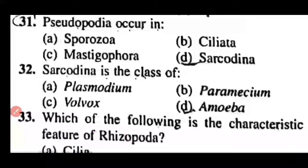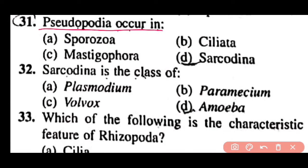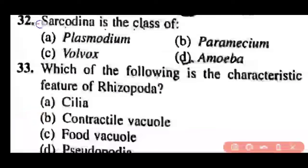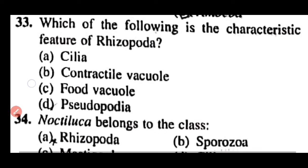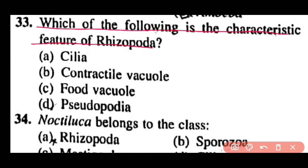Question 31: Pseudopodia occur in Sporozoa, Ciliata, Mastigophora, or Sarcodina? Correct answer is option D. Class Sarcodina has pseudopodia as a locomotory organ. Question 32: Sarcodina is the class of Plasmodium, Paramecium, Volvox, or Amoeba? Correct answer is option D. Sarcodina is the class of Amoeba. Question 33: Which is the characteristic feature of Rhizopoda — cilia, contractile vacuole, food vacuole, or pseudopodia? Correct answer is option D. Pseudopodia is the characteristic feature of class Rhizopoda.